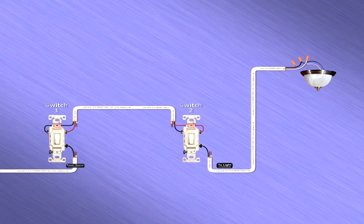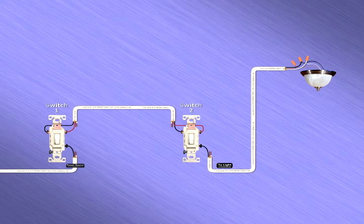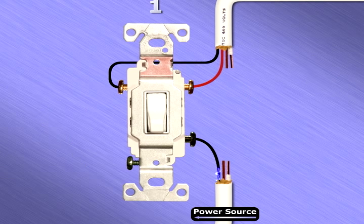Now, let's see how a three-way switch works when in action. Electrical current travels from the power source and arrives at the common screw on the first terminal.